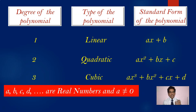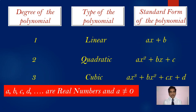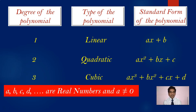The important condition is that a cannot be equal to 0. For instance, if you write a cubic polynomial with coefficient a = 0 for x³, then 0x³ is 0, and it cannot be taken as a cubic polynomial. So 2x³ plus 5x is a cubic polynomial, but 0x³ plus 2x is not.